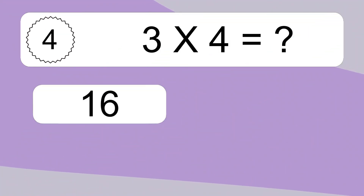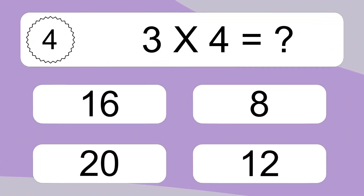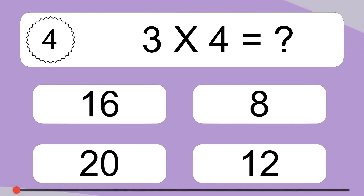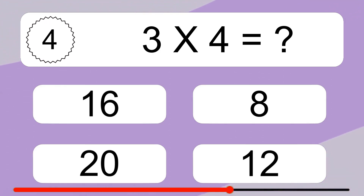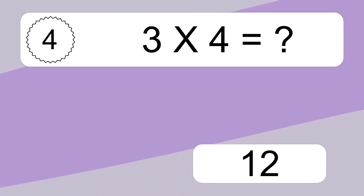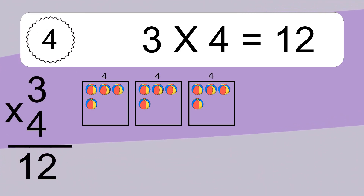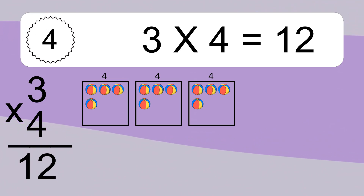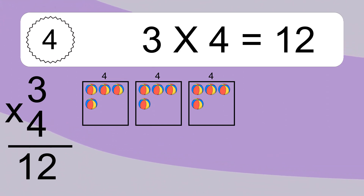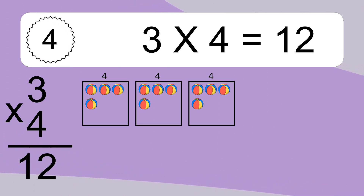Three times four equals what? Three times four equals twelve. We have three boxes, and each box has four colorful balls inside. If you count all the balls in all the boxes together, you will have three times four balls. This equals twelve balls.